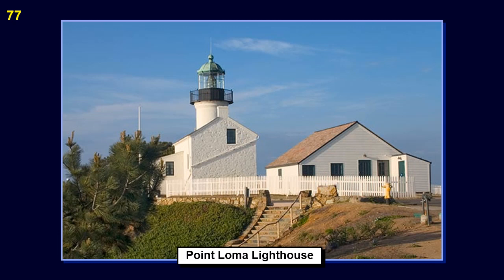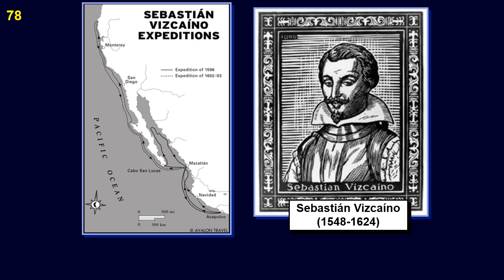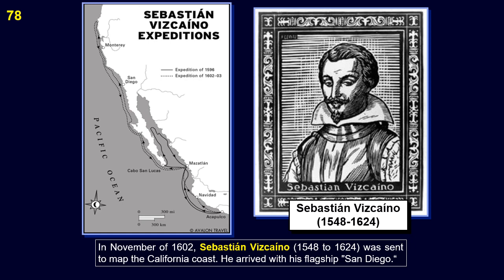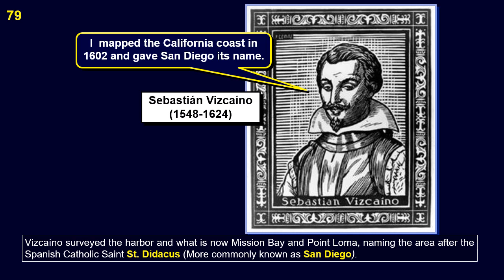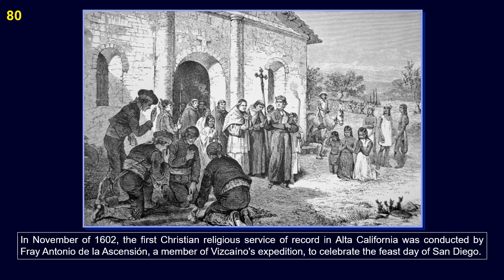This is the lighthouse at Point Loma. In November of 1602, Sebastian Vizcaino, 1548–1624, was sent to map the California coast. He arrived with his flagship San Diego. Vizcaino surveyed the harbor and what is now Mission Bay and Point Loma, naming the area after the Spanish Catholic saint named Saint Didacus, more commonly known as San Diego. In November of 1602, the first Christian religious service of record in Alta California was conducted by Fray Antonio de la Ascension, a member of Vizcaino's expedition, to celebrate the feast day of San Diego.